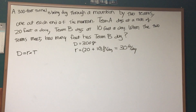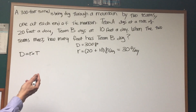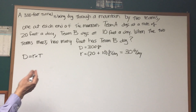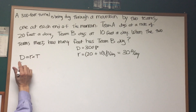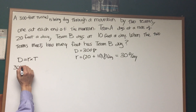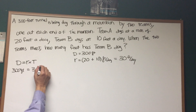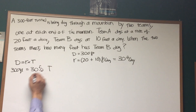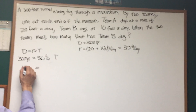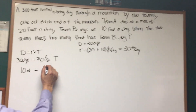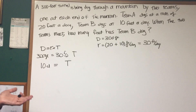Does that make sense? So we're going to find out how long it will take them to finish the tunnel. Distance equals rate times time. The distance equals 300 feet, the rate is 30 feet a day. If we divide both sides by 30, we see that the time it will take them to finish the tunnel is 10 days.